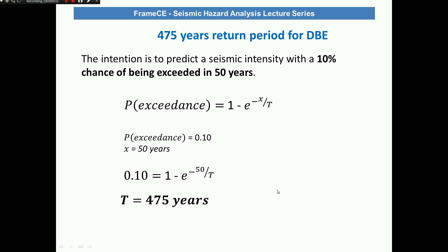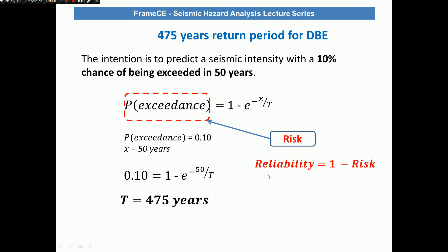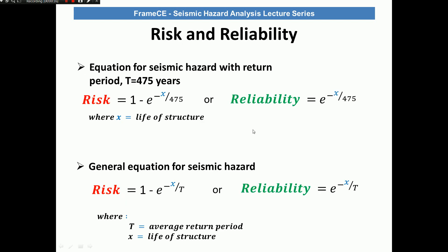In layman's terms, the probability of exceedance is called risk, and reliability is a function of risk given by a related equation. If you have an earthquake with a return period of 475 years, you can calculate the risk or the reliability depending on what you need. What this means is that if you designate the design life of your structure, you can calculate the reliability and subsequently the risk. This general equation is actually my favorite because it is the general equation for seismic hazard.